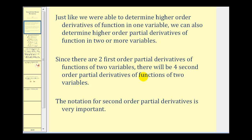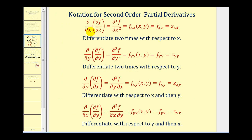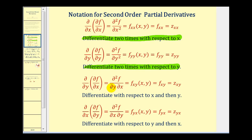The notation used for second order partial derivatives is very important. The first notation tells us to find the partial derivative with respect to x twice. Similarly, another notation tells us to find the partial derivative with respect to y two times. Now these next two can be a little tricky at first. The notation tells us to find the partial derivative with respect to x, and then with respect to y in that order — working from right to left.